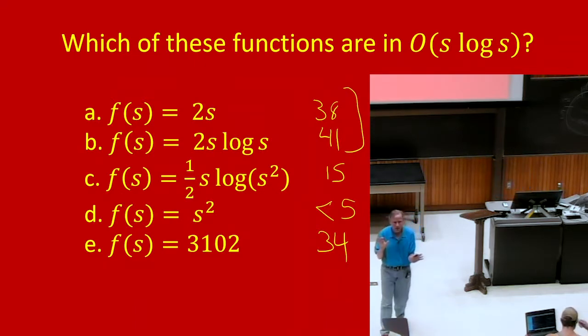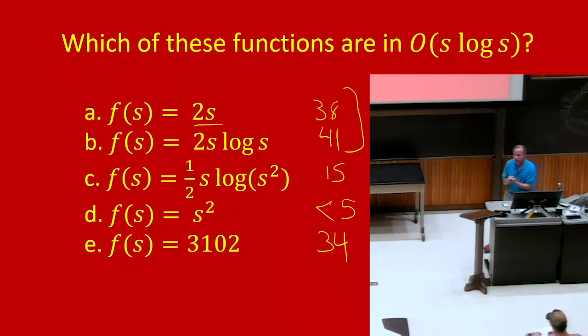Our intuition and the definitions tell us that 2s grows no faster than s log s, asymptotically. 2s log s, so these two should be equal. But we're still going to look at the definition because our intuition can fail us.